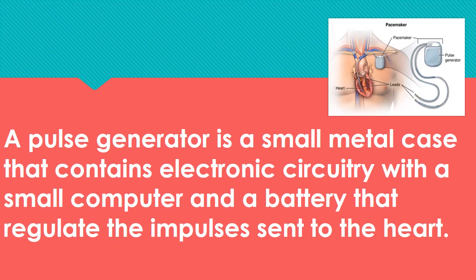Here you can see the pacemaker — that is the pulse generator. In a temporary pacemaker, the pulse generator is kept external. In a permanent pacemaker, we place the pulse generator subcutaneously with the leads. Whether it is a single chamber, dual chamber, or triple chamber depends on the patient's condition as decided by the cardiologist. The pacing wire is mainly focused on the right atrium or right ventricle; it should never be inserted in the left ventricle because the left ventricle pressure is high. The pulse generator is a small metal case containing electronic circuitry with a small computer and a battery that regulates the impulses into the heart.